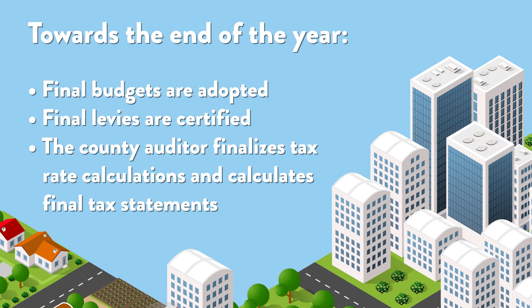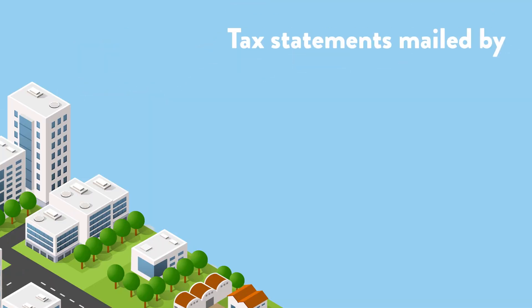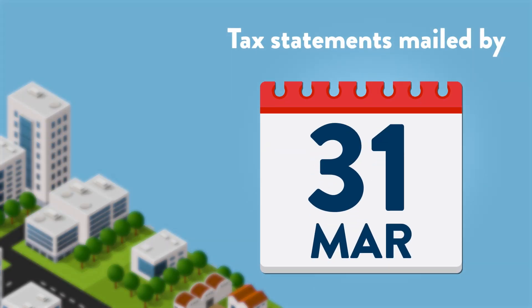Towards the end of the year, final budgets are adopted and final levies are certified to the Department of Revenue. The county auditor finalizes tax rate calculations and calculates final tax statements. The tax statements are mailed to property owners no later than March 31st in the payable year.